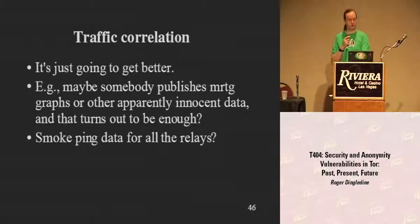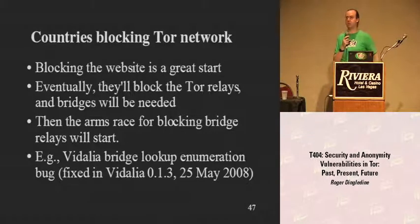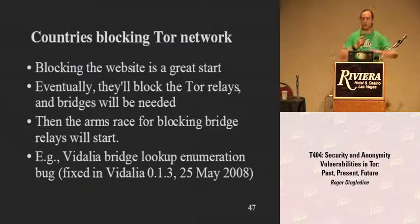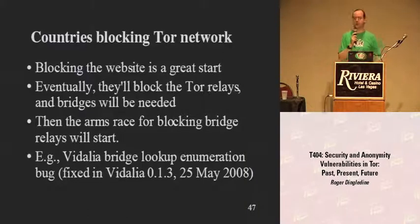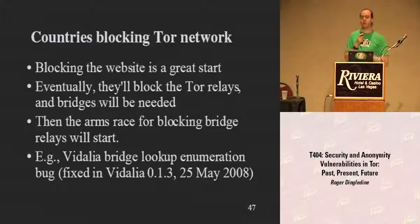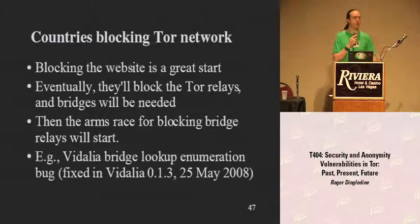Countries are going to keep blocking the Tor network more and more. There are press articles even this week from The Guardian about China and the Olympics — China keeps saying they've opened up their network except for those 'bad things nobody would want to look at,' and a lot of journalists are upset about that. Once they start blocking Tor, we have to deploy our bridges design, and that's going to be an arms race. There have already been bugs we've fixed where an attacker could easily enumerate all the bridge servers, and there are doubtless going to be more. And then another issue needing a lot of attention: data retention — in Germany and across the EU right now...